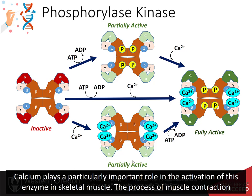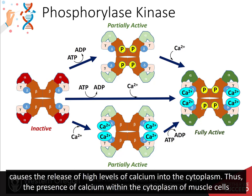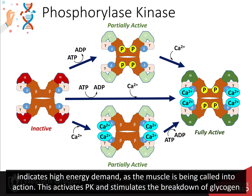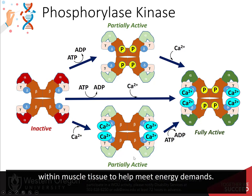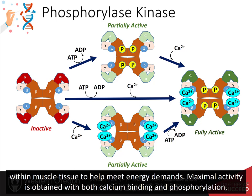Calcium plays a particularly important role in the activation of this enzyme in skeletal muscle. The process of muscle contraction causes the release of high levels of calcium into the cytoplasm. Thus, the presence of calcium within the cytoplasm of muscle cells indicates high energy demand as the muscle is being called into action. This activates phosphorylase kinase and stimulates the breakdown of glycogen within muscle tissue to help meet energy demands. Maximal activity is obtained with both calcium binding and phosphorylation.